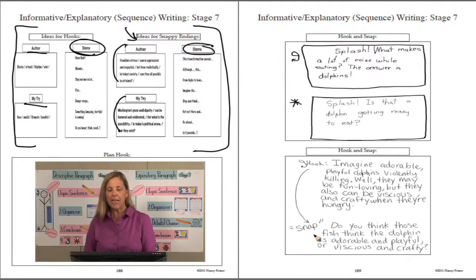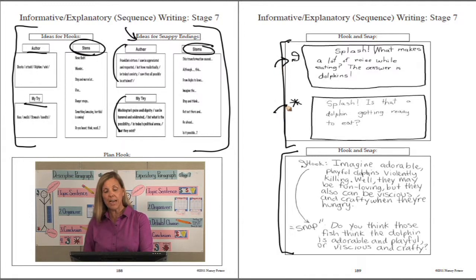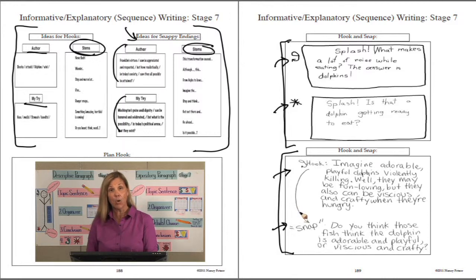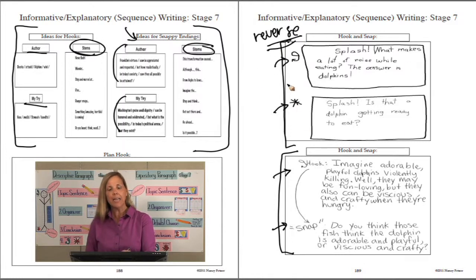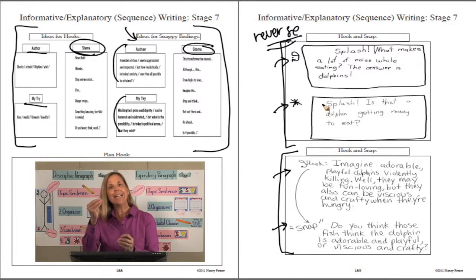On the next page you'll see an example for the dolphin organizer—two different types of hooks with snappy endings that were developed. We will review these at the end of our lesson when we finish our organizer. Notice this will be on the reverse side of the organizer. You'll turn your organizer over and on that blank side, draw a hook and a snappy ending so you can plan the two together. They tend to begin and end your writing with a similar style or ideas.